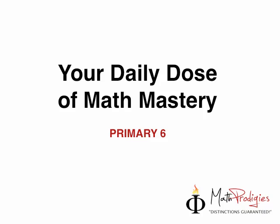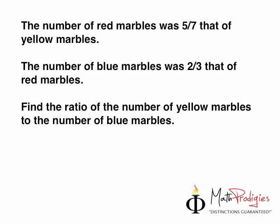No worries, let's check the answer first. The question was: yesterday, the number of red marbles was 5 to 7 that of yellow marbles. The number of blue marbles was 2 to 3 that of red marbles. Find the ratio of the number of yellow marbles to the number of blue marbles. The answer is 21 is to 10. If you got it right, give yourself a high five — you are a math prodigy!